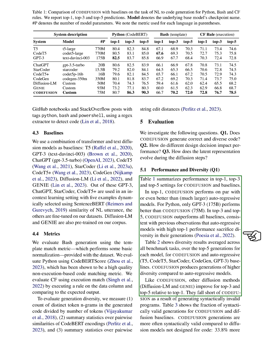5.1 Performance and Diversity (Question 1): We've summarized the system's performance in a table, showing the top-1, top-3, and top-5 results for our system and other baseline systems.